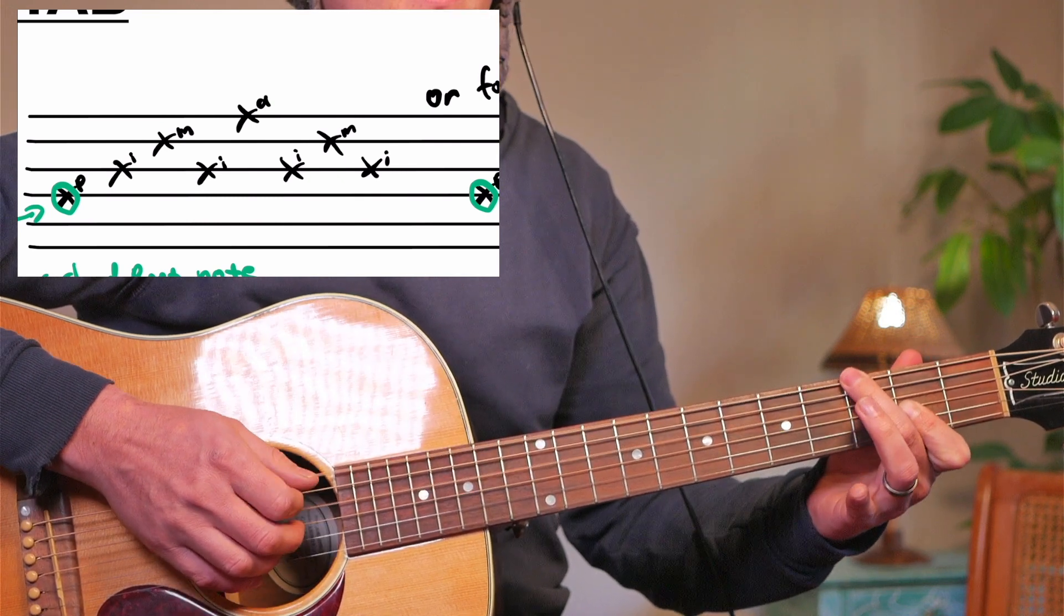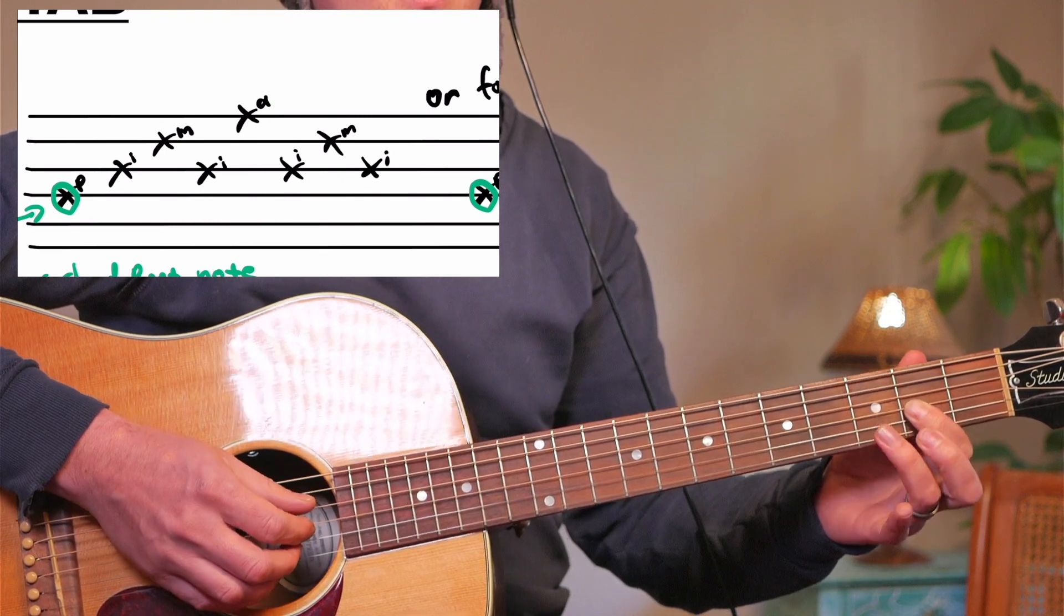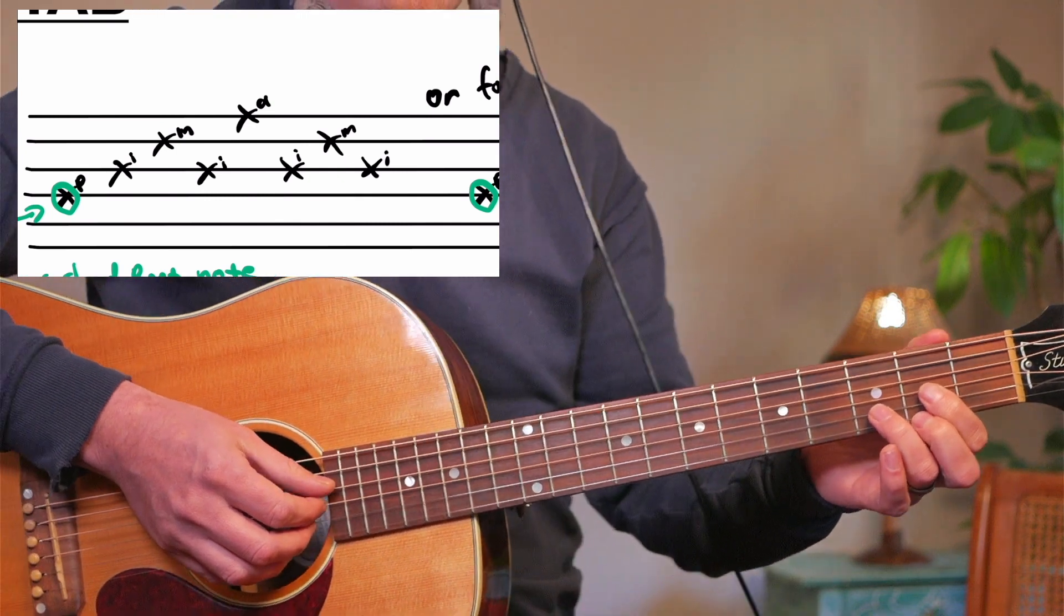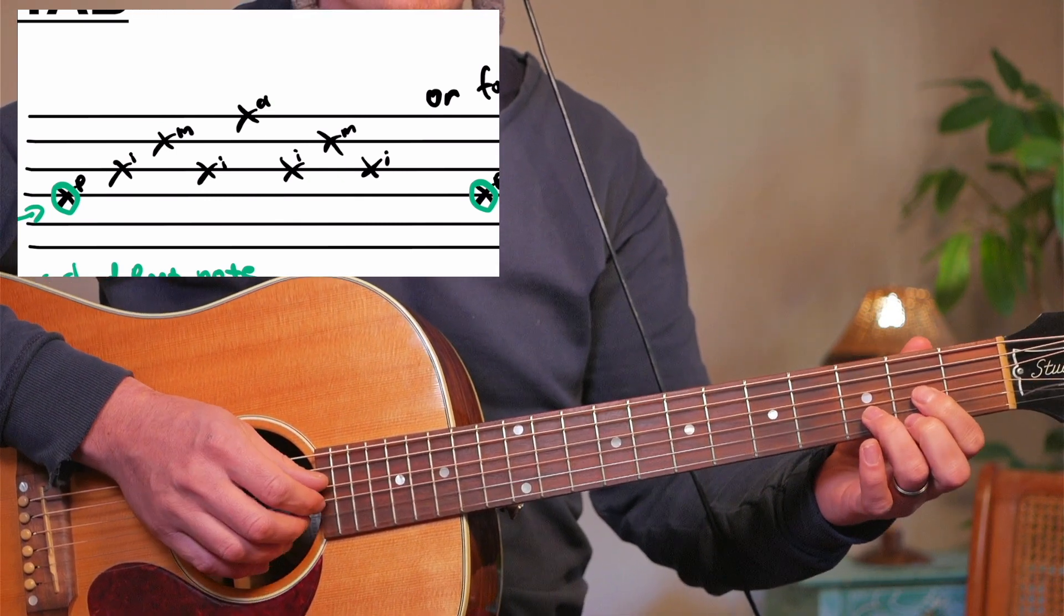And then the G again. Okay, so for the D, the fingers are four, three, two, one on those strings and you go.